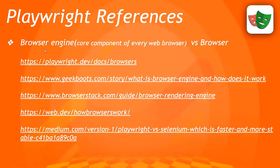Some topics you might find interesting: what is a browser engine versus a browser? Simply put, a browser engine is the core component of every web browser, and there are three major browser engines — Gecko, Chromium, and WebKit, as we already discussed. There are also articles about how browsers are handled in Playwright, the difference between browser engine and browser, and web socket versus normal HTTP protocol. If you are interested, you can go through those.